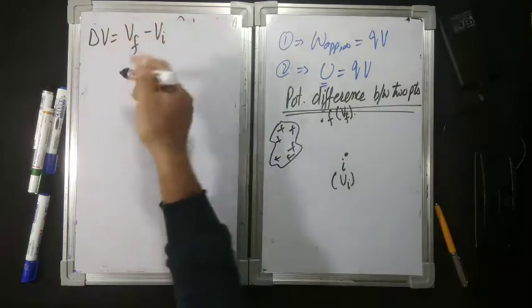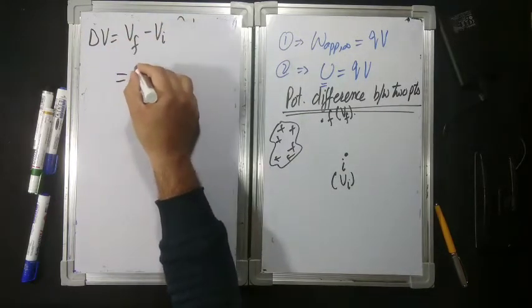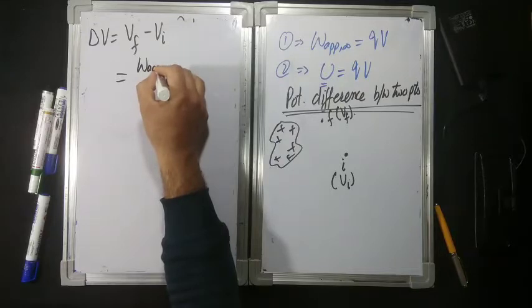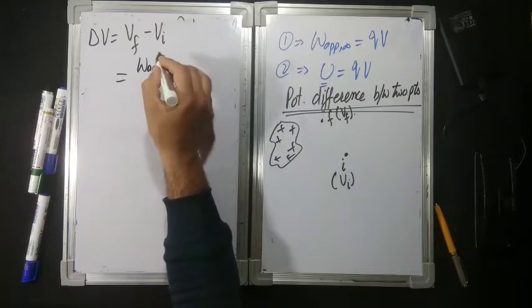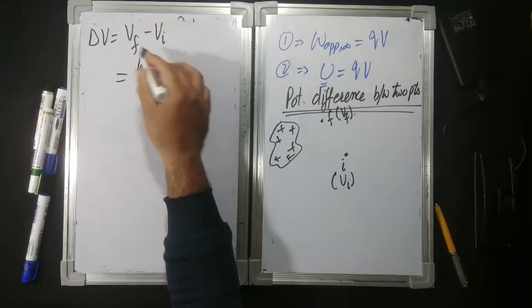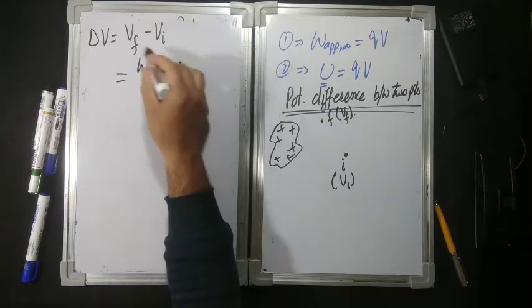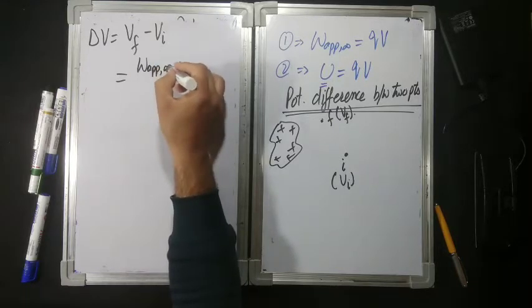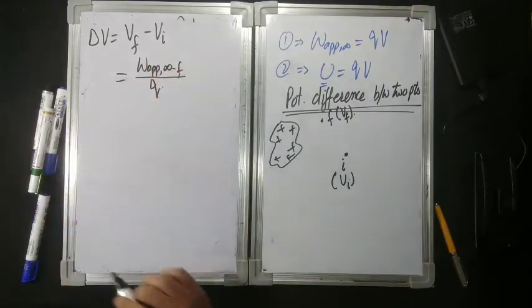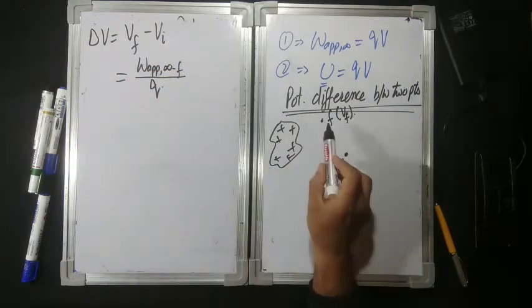Now, VF and VI in terms of work, simply. So W applied from infinity to point F, per unit charge — that gives us VF.